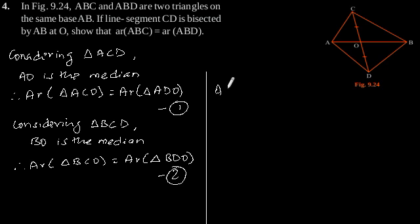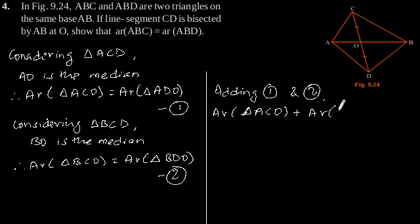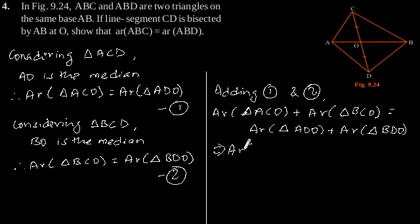Now adding equations 1 and 2, we get area of triangle ACO plus area of triangle BCO equals area of triangle ADO plus area of triangle BDO. This implies area of triangle ABC equals area of triangle ABD, hence proved.